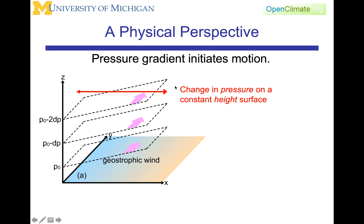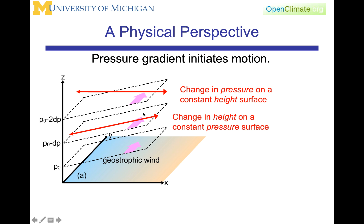This line here represents the change in pressure on a constant height surface, because this is drawn at constant z. You can see it will have different pressure here — here it's p0 minus 2Δp, and over here it's going to be p0 minus something bigger, like maybe 3dp. The other alternative is the change in height on a constant pressure surface. Here we've drawn a line on a constant pressure surface, and you can see that one end is at one height and the other end is at another height. The challenge is how to do this in a way that preserves the laws of physics and conservation of momentum.